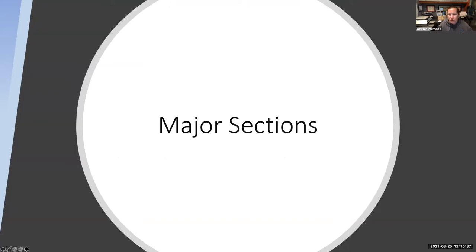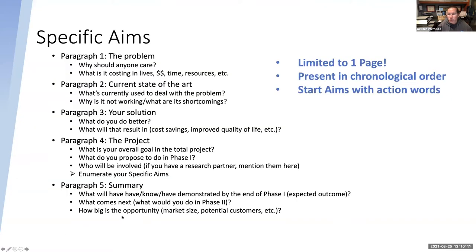Now you're going to get to work on the first two major sections. The first is the specific aims section, which is limited to one page. Typically your aims should be presented in chronological order. I like to start all my aims with action words — so instead of 'to design and develop,' I just start with 'design and develop.' So they should be very specific.